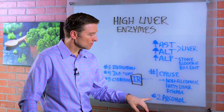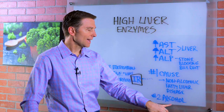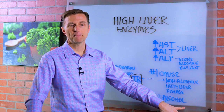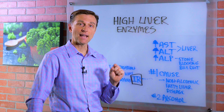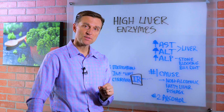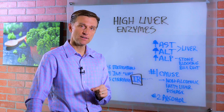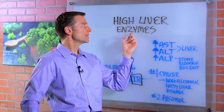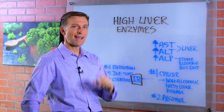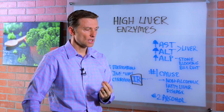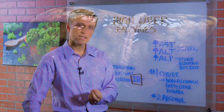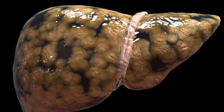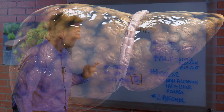Number two: a fatty liver that's caused by alcohol. Between 90 and 100% of alcoholics have a fatty liver, and of course they're going to also eventually have high liver enzymes. Alcohol does destroy the liver and the enzymes that are supposed to work through the liver.